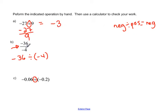For this next problem, we have negative 36 divided by negative 4. So if we have a negative divided by a negative, negative divided by a negative is always going to equal a positive. So we know our answer has to be positive for this next one.